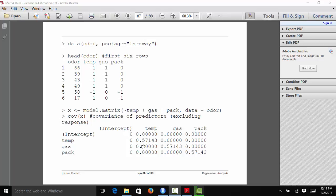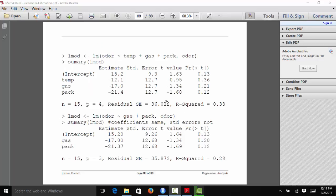If we fit a model that has all three regressors in the model, we get estimates of 15.2, negative 12.1, negative 17, and negative 21.4. If we refit this model without the temp variable, so we're going to remove this variable right here,